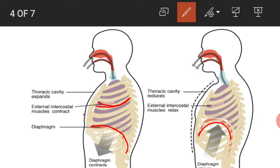These movements of the intercostal muscles and diaphragm increase the area of the thoracic cavity. The pressure on the lungs reduces, so air from outside rushes into the lungs to equalize the pressure on both sides. It is an active process because energy is spent in the contraction of the intercostal muscles and diaphragm.